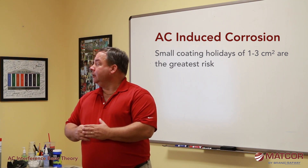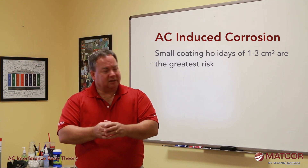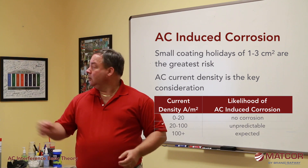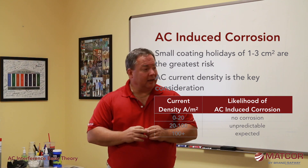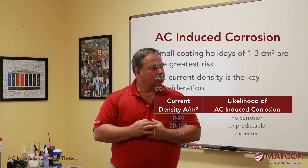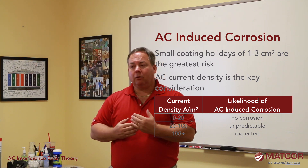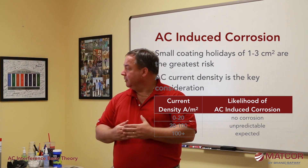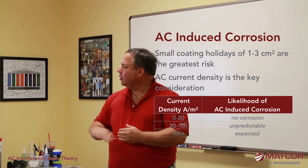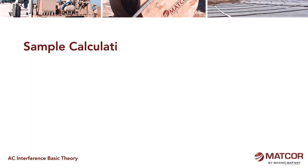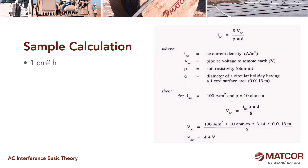It's these small coating holidays where lots of current is being discharged through a small holiday that causes AC induced corrosion. We can measure that — it's called flux — and that's the amount of current over a certain surface area. If we have 20 amps per meter squared or less being discharged off a coating defect, we don't have corrosion. Between 20 and 100 amps per meter squared, we have a corrosion risk. Above 100 amps per meter squared, you can expect corrosion to occur.